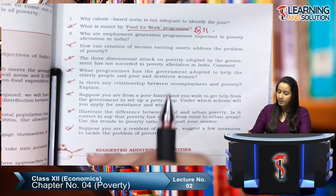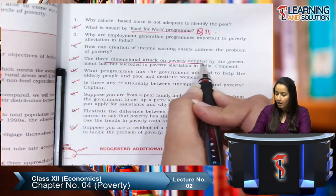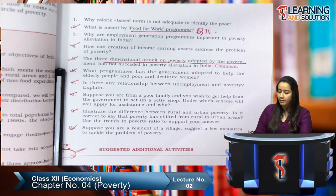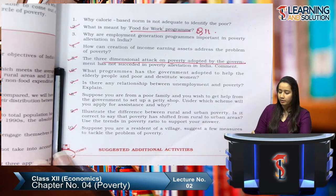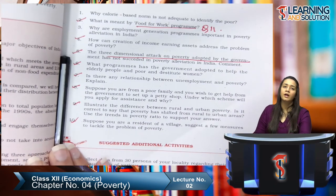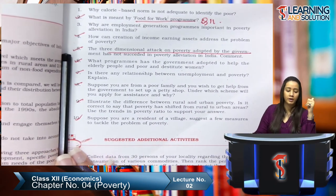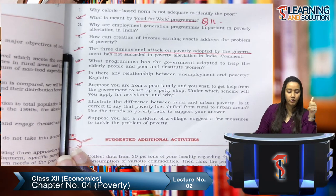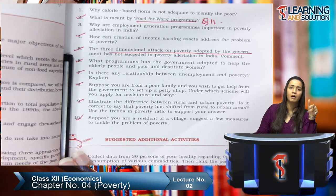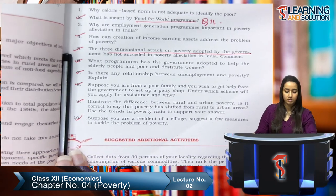Question five: the three-dimensional attack on poverty adopted by the government — the three dimensions were growth-oriented approach, poverty alleviation program, and minimum needs program, introduced in the 1st, 3rd, and 5th five-year plans respectively.